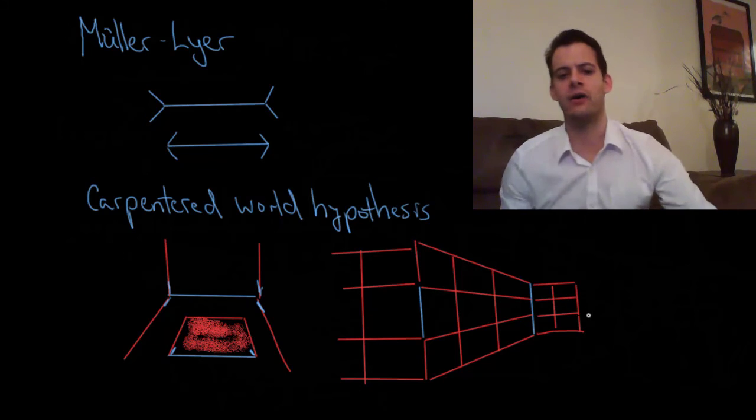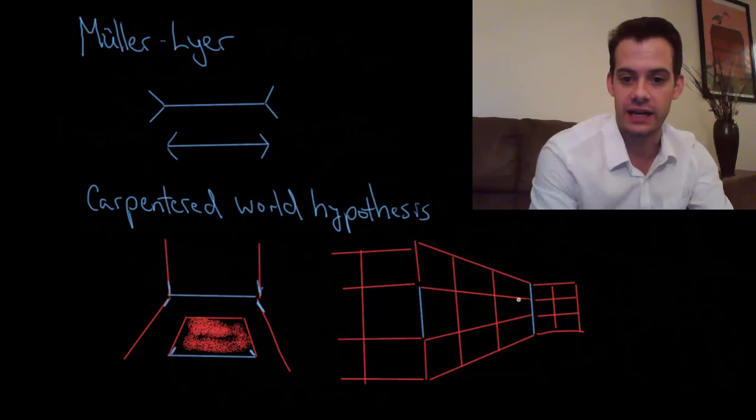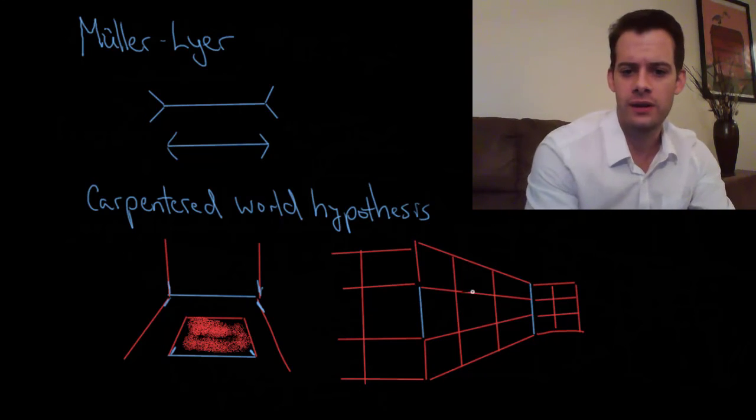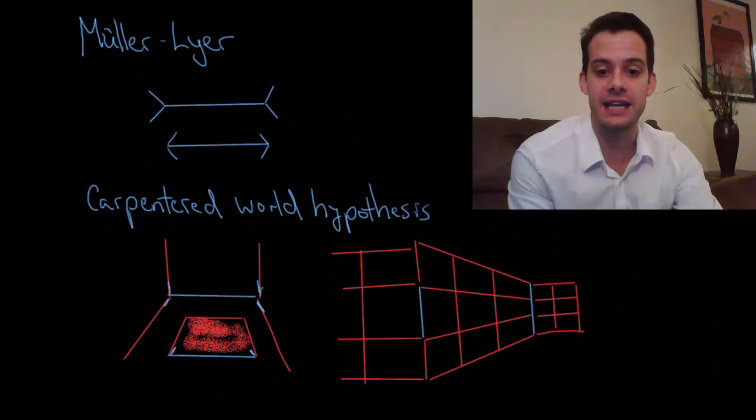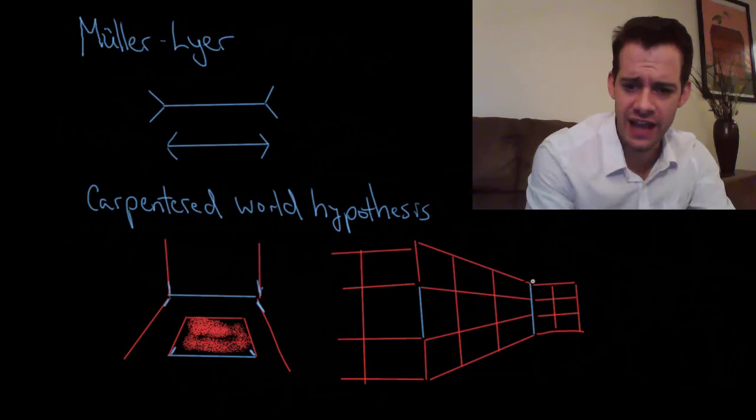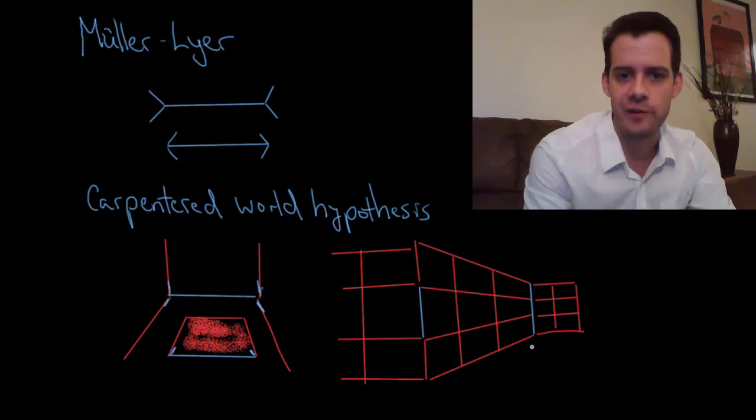And now hopefully you have this same sort of experience where this line here seems to be longer than this one even though you know they're identical. So what's happening here? Again, it's using this idea of linear perspective, parallel lines converging, and the idea that this line is farther away from you.